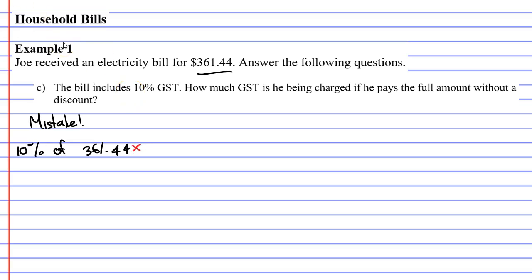What you need to understand is when they add GST on, they have a price. We'll give that a question mark with a dollar sign. They had an original dollar value and they added 10% to that value, which then gave them $361.44. You actually need to find 10% of this number that you don't actually know.